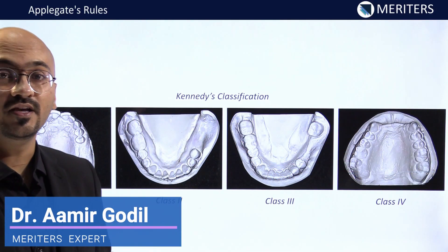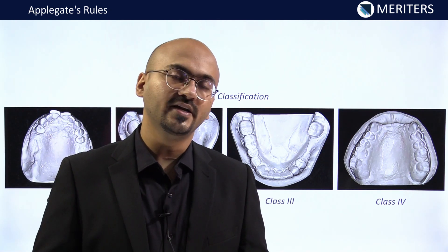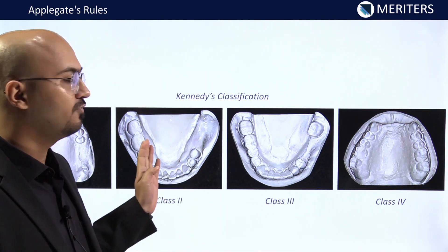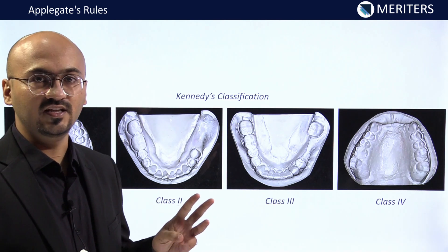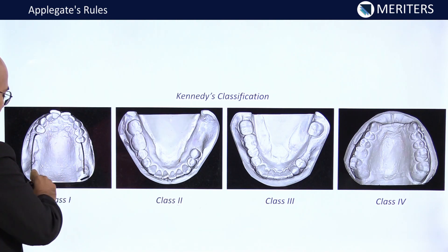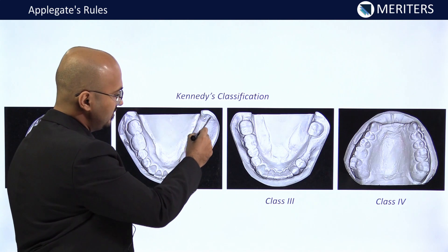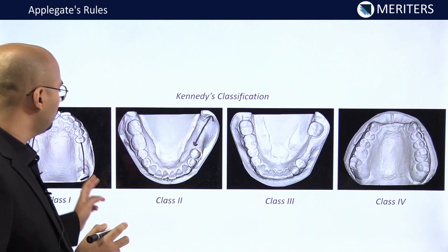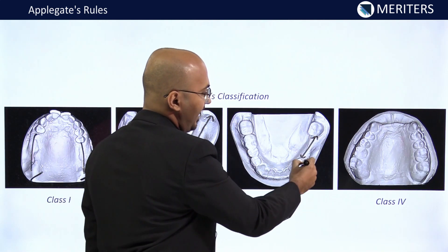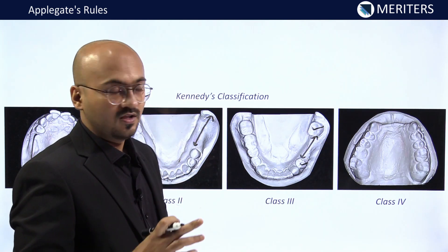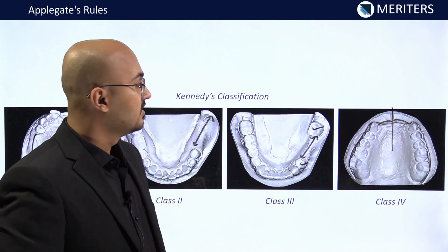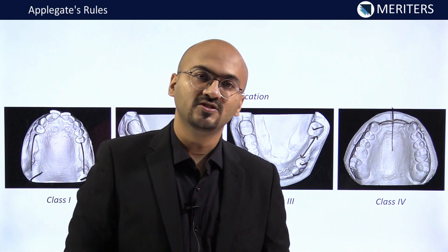In this video we will study Applegate's rules. As we know, partially edentulous arches are classified by Edward Kennedy into four classes. Class 1 is bilateral edentulous arch with no posterior teeth present. Class 2 is unilateral edentulous area with no posterior teeth present. These two are distal extension classes. Class 3 is a unilateral edentulous area with anterior and posterior teeth present — a tooth-bound case. Class 4 is an edentulous area crossing the midline in the anterior region.